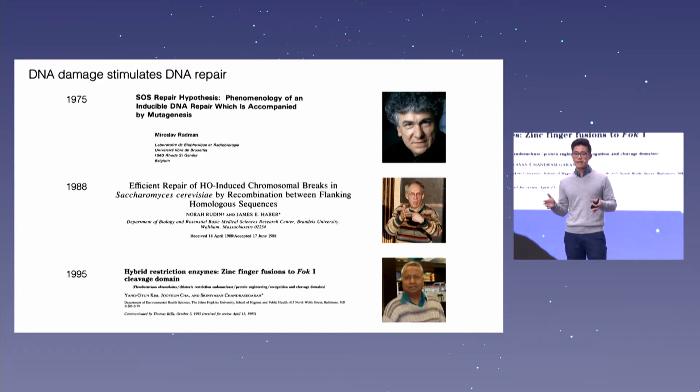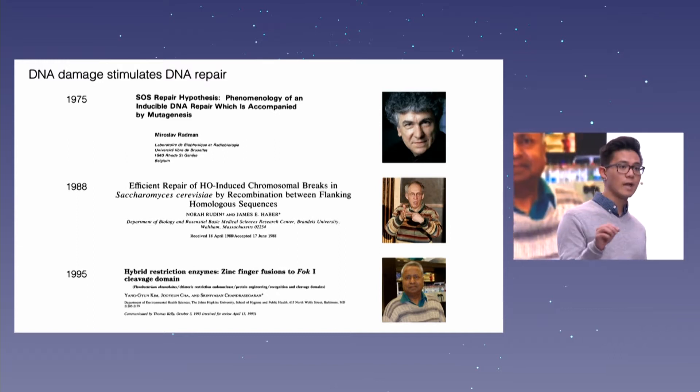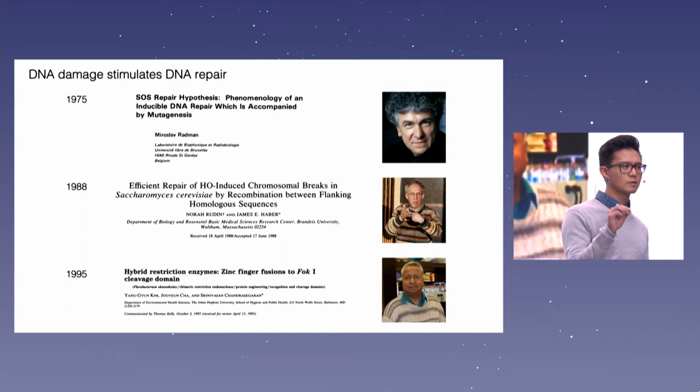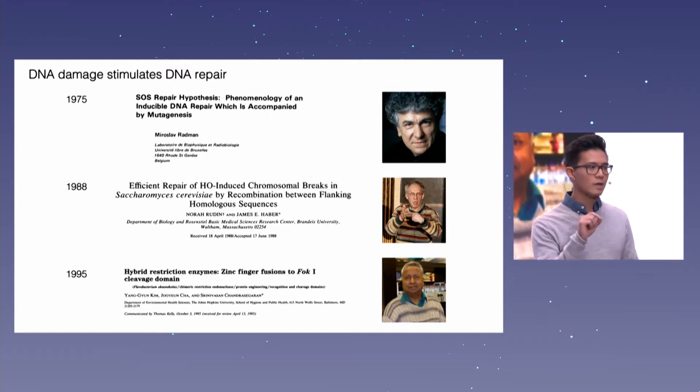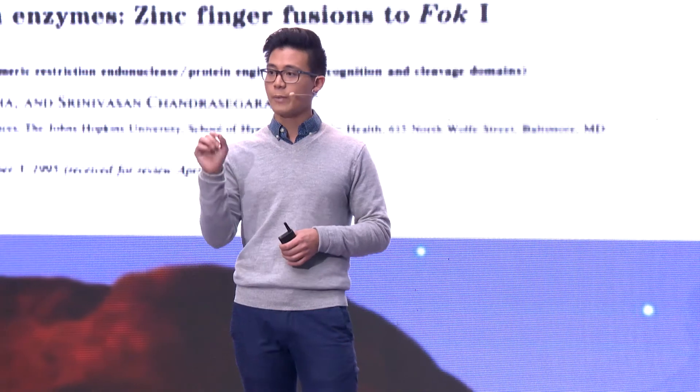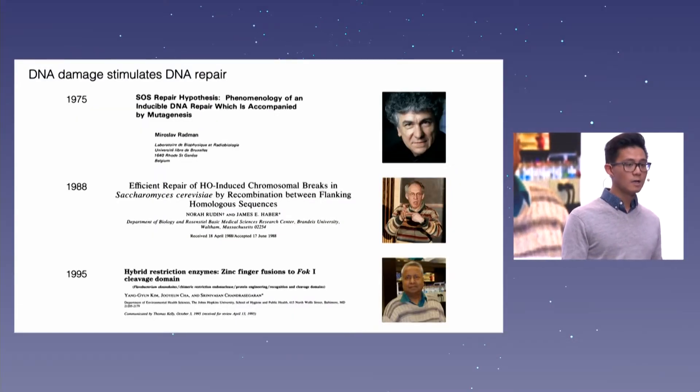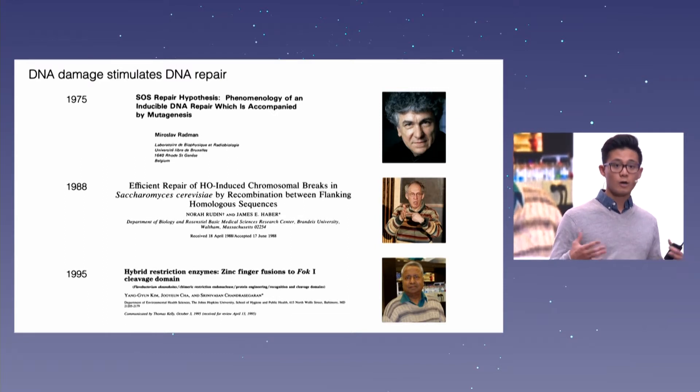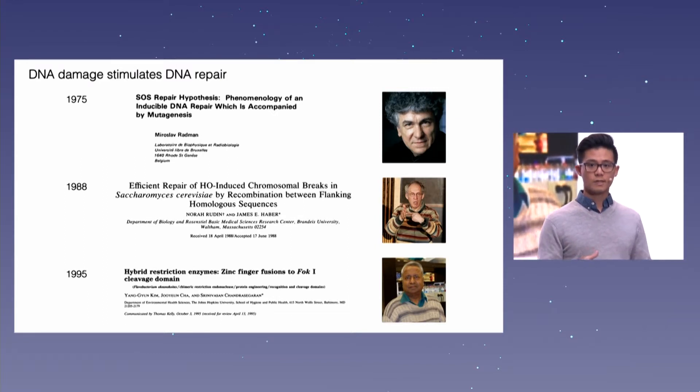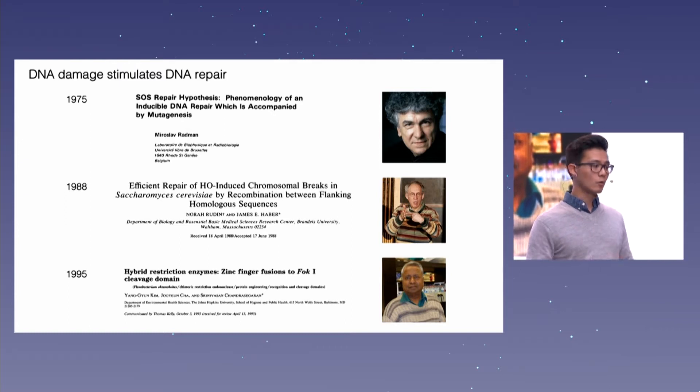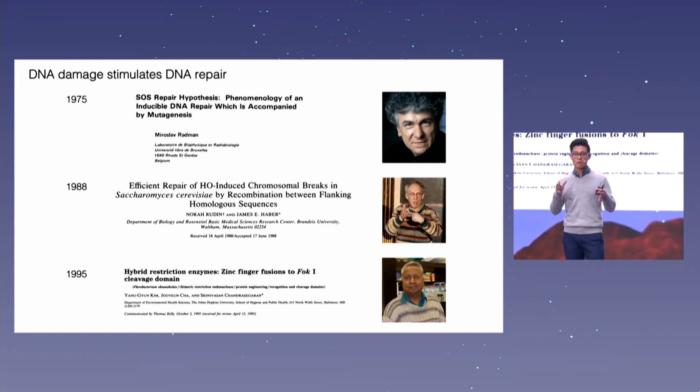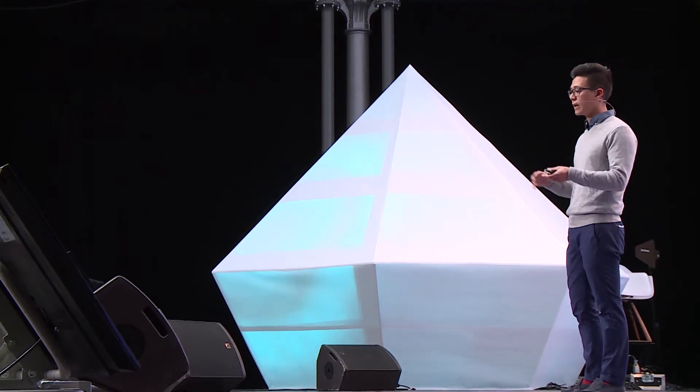About 10 years later, in the late 80s, there's this experiment that was done by Jim Haber then at Brandeis, who showed this really interesting phenomenon. If you could create a targeted double-stranded break in a special place of the yeast genome, you would stimulate repair only at that site. So putting all these disparate pieces together in the mid-'90s, Srinivasan and Chandra Segrin created the first targeted molecular scissors by fusing these molecular scissors to programmable zinc finger proteins. And this idea of making targeted breaks in the genome to stimulate DNA repair is really the main underlying concept behind modern genome editing technologies.